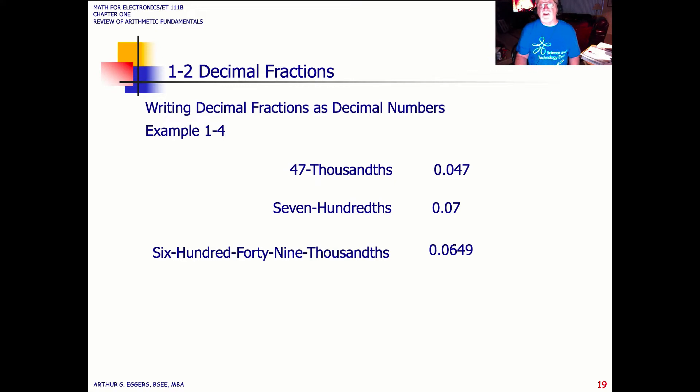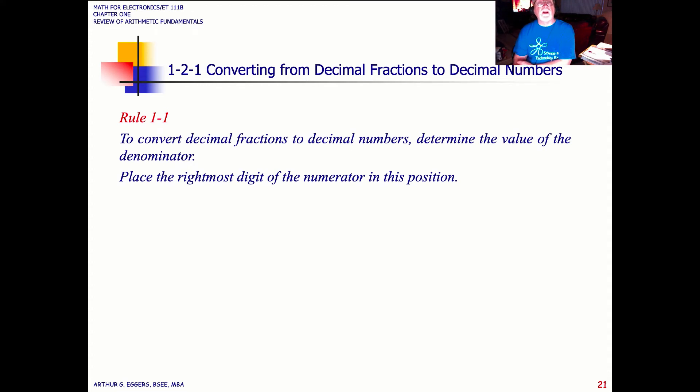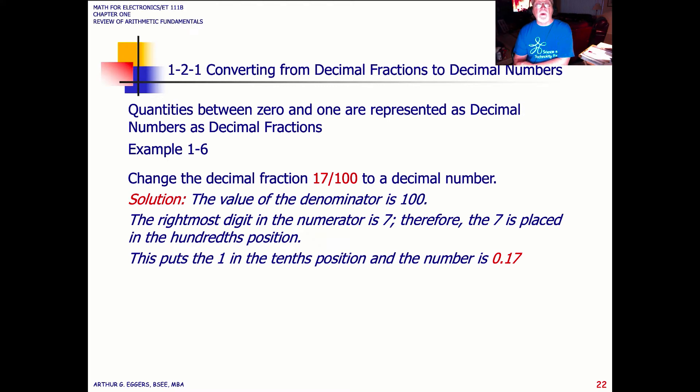In this case, 47 thousandths becomes the value represented as 0.047, the 7 telling us that we are looking at thousandths. In this case, 423 thousandths could just as easily be represented as 432 divided by what? 10 to the third or 1,000. Keep track of the rules in your textbook. Rule number one, dealing with conversion of decimal fractions to decimal numbers determines by the value of the denominator. So we go back to that representation, 17 divided by 100, 17 hundredths then, or the decimal relationship, 0.17 is 17 hundredths.